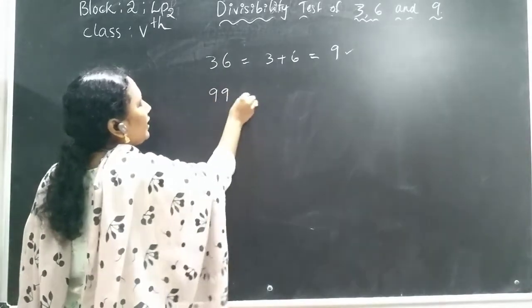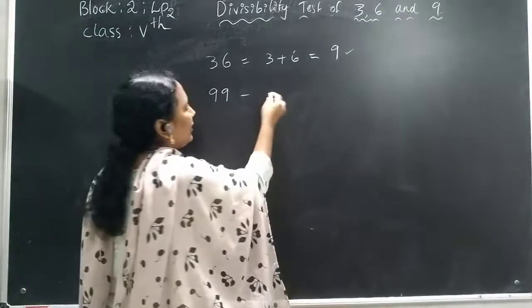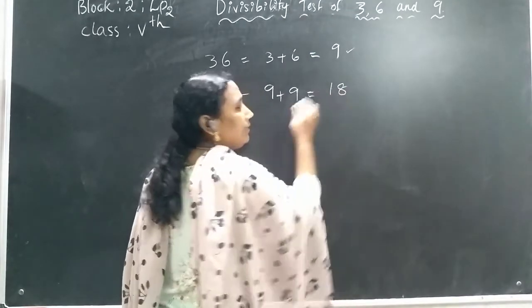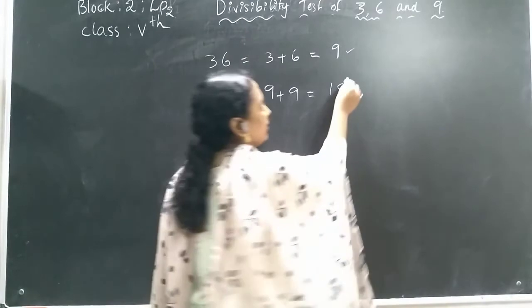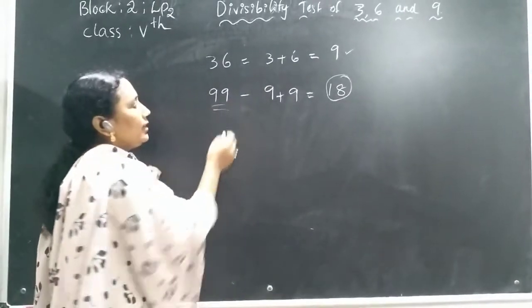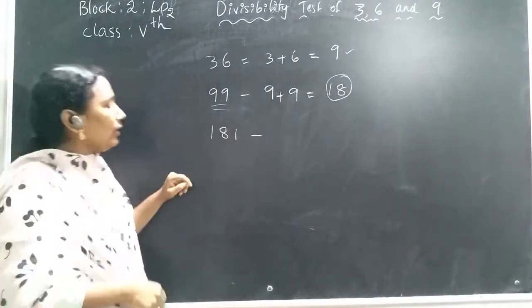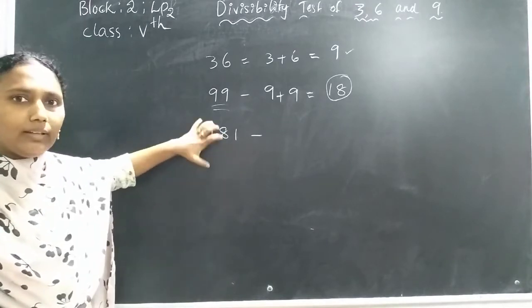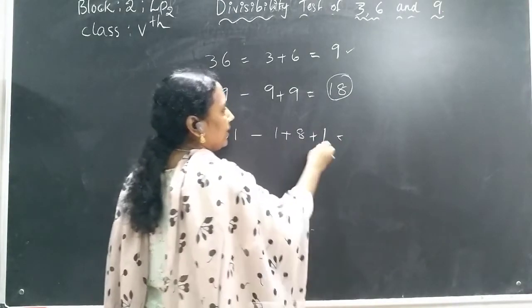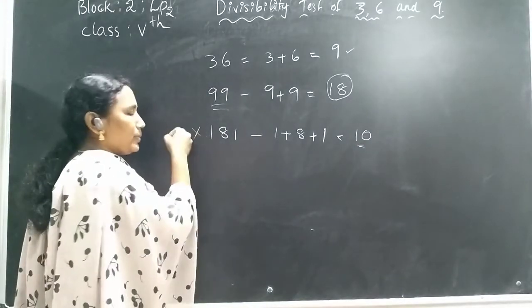Next example: 99. We add 9 plus 9, which equals 18. Is 18 in the 9 times table? Yes — 9 times 2 is 18. So 99 is divisible by 9. Now take 181. Add 1 plus 8 plus 1: 1 plus 8 is 9, plus 1 is 10. Is 10 in the 9 times table? No. So 181 is not divisible by 9. Without doing long division, we can determine divisibility by 9.